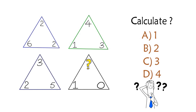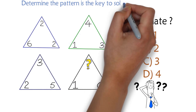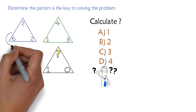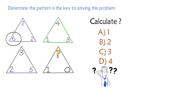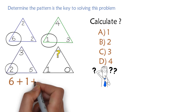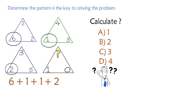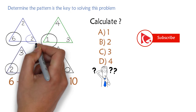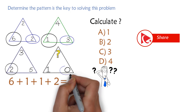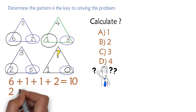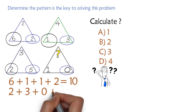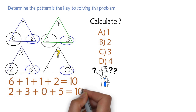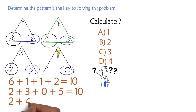Let's continue to see how we can solve this challenge together. Determining the pattern is the key. For example, if you add up the numbers in the lower left corners — 6 plus 1 plus 1 plus 2 — across all triangles, you get a sum of 10. The same thing happens when you add up the numbers in the bottom right corners: 2 plus 3 plus 0 plus 5 also equals 10.